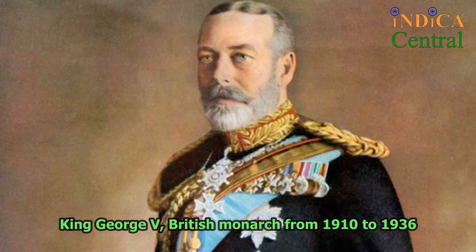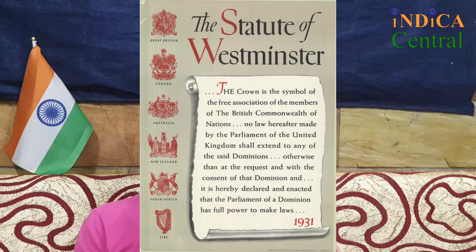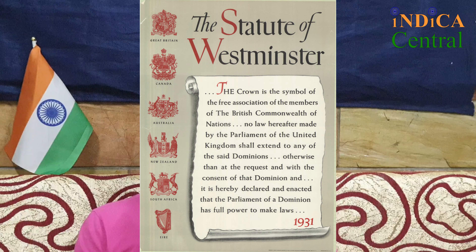The British monarch was originally the head of the Commonwealth and the sovereign for all these four dominions. In 1931, the British government passed the Statute of Westminster, which gave parliamentary independence to these four dominions.